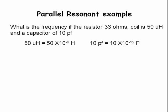50 microhenries equals 50 times 10 to the minus 6 henries. 10 picofarads equals 10 times 10 to the minus 12 farads.